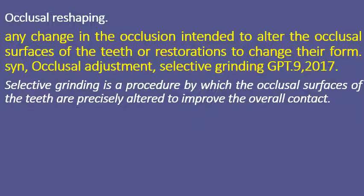Another definition states that selective grinding is a procedure by which the occlusal surfaces of teeth are precisely altered to improve the overall contact. Both definitions involve modification of the occlusal surfaces of the teeth in order to improve the overall contacts.